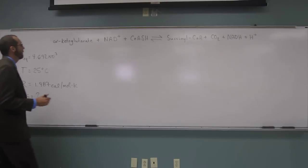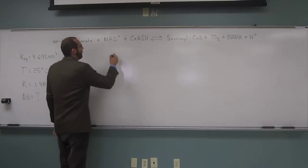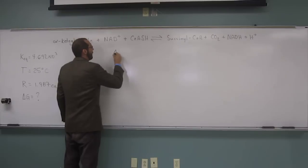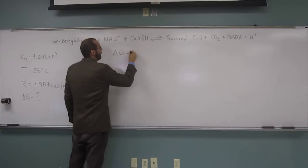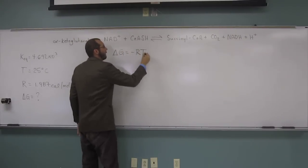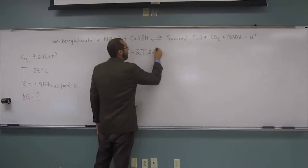Remember the equation. Okay, so do you all remember it? What is it? Delta G equals negative RT ln KEQ.